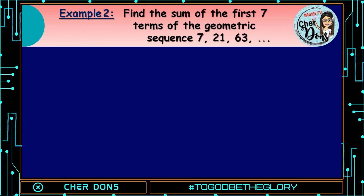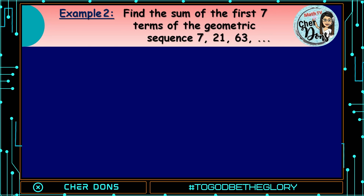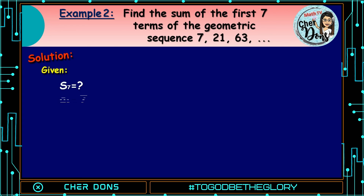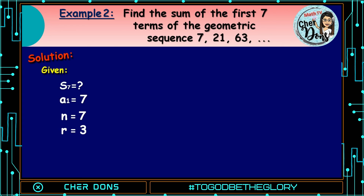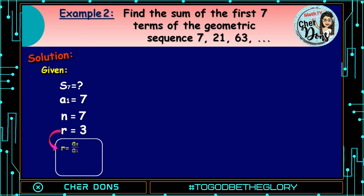Example number 2. Find the sum of the first 7 terms of the geometric sequence 7, 21, 63, and so on. Solution. Given: we're looking for S of 7. A sub 1 is 7, n is 7, and r is 3. We get the value of r by dividing the second term by the first term: a sub 2 divided by a sub 1 is 21 divided by 7, which is equal to 3.